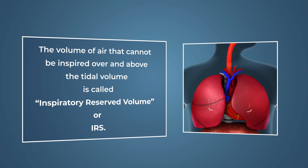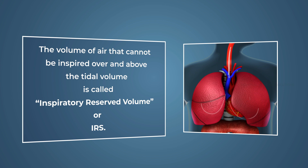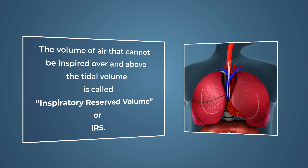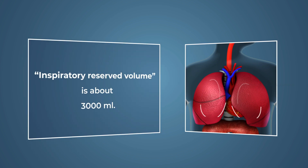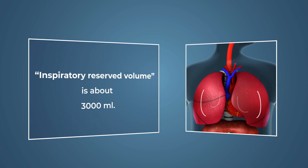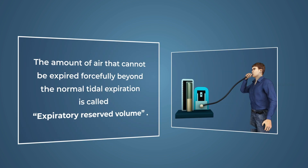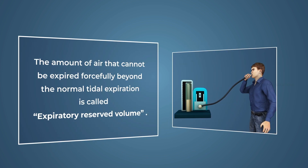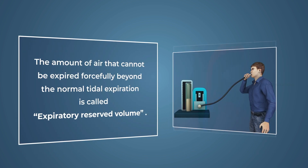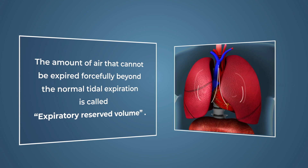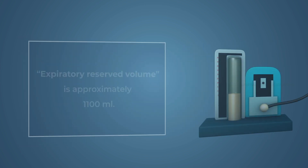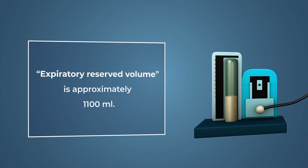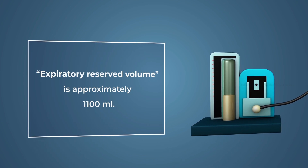The volume of air that can be inspired over and above the normal tidal volume is called inspiratory reserve volume, or IRV, which is 3,000 milliliters. The amount of air that can be expired forcefully beyond the normal tidal expiration is called expiratory reserve volume; it is approximately 1,100 milliliters.